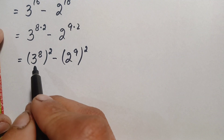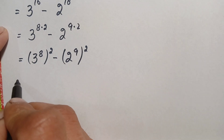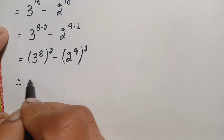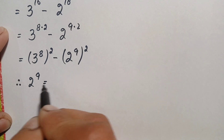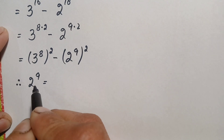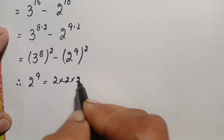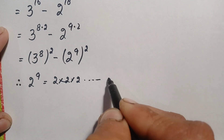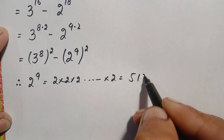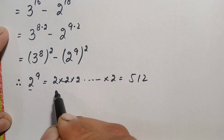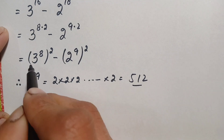Now we will find the value of 2 raised to power 9. This means we multiply the base 2 nine times. Multiplying 2 nine times is very simple — it gives us 512. So the value of 2^9 is 512.